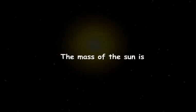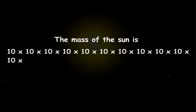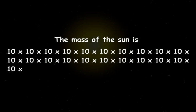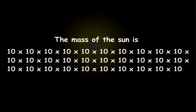The mass of the sun is a number obtained by multiplying 10 repeatedly for 30 times. It's a very large number.